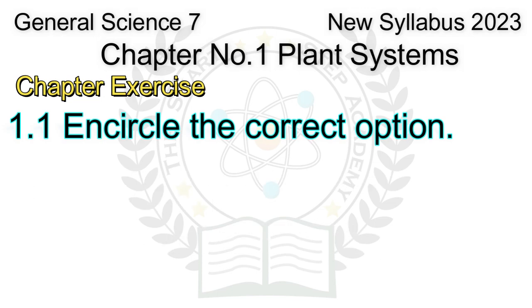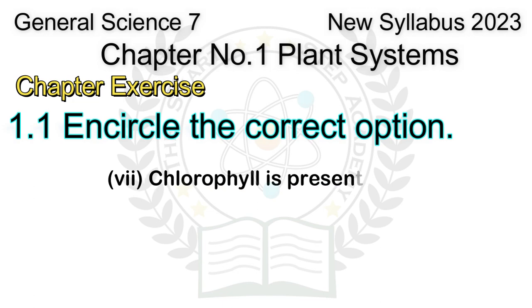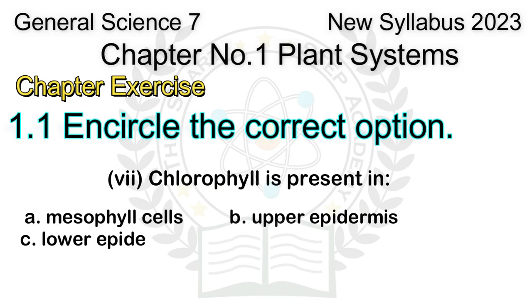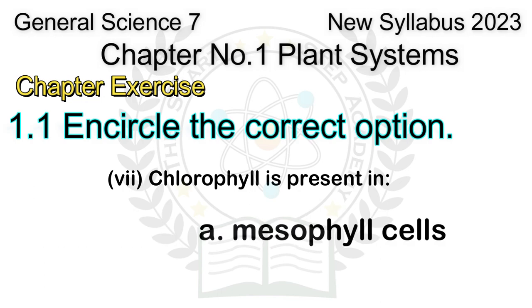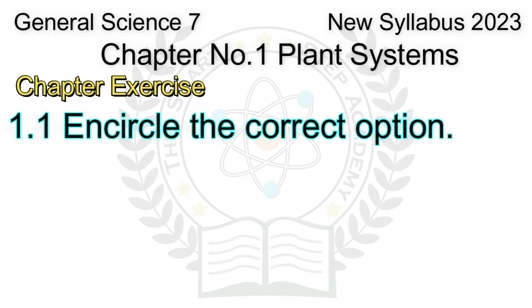Question 7: Chlorophyll is present in: A. Mesophyll cells, B. Upper epidermis, C. Lower epidermis, D. Endodermis. Answer: A. Mesophyll cells.